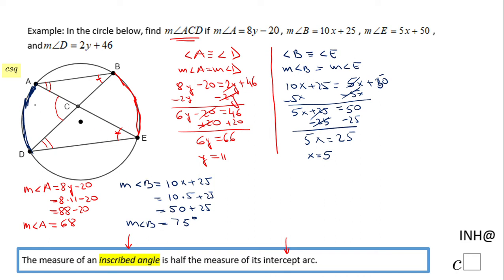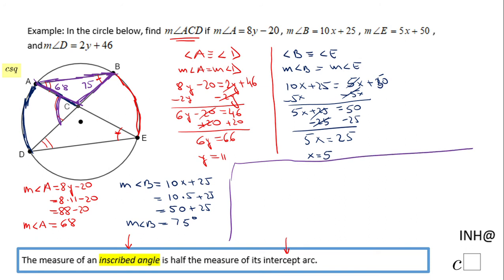We need angles A and B because we have triangle ACB, and we know these two angles: angle A is 68 degrees and angle B is 75 degrees. Angle ACD is an exterior angle of triangle ACB, which means its measure equals the sum of the two remote interior angles, angle A and angle B.